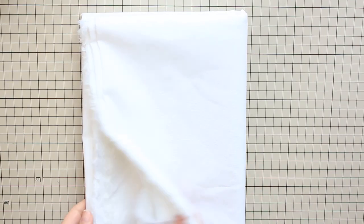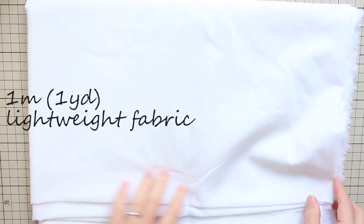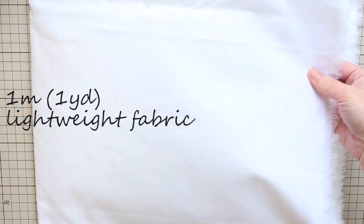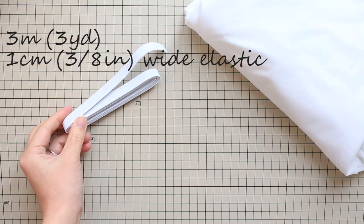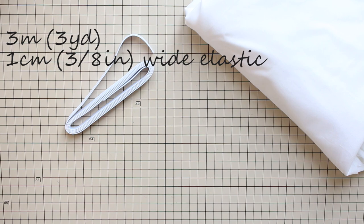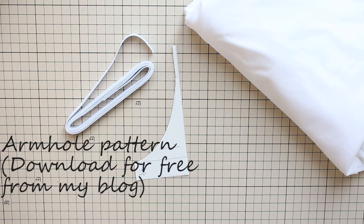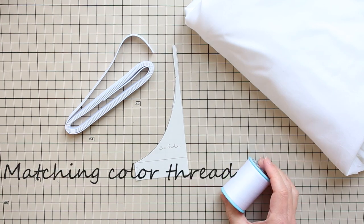To make this DIY peasant crop top, you need 1 meter or 1 yard of lightweight fabric. I'm using lightweight cotton here, but chiffon or lace would make a really cute top as well. 3 meters or 3 yards of 1 centimeter wide elastic, an armhole pattern you can download for free from my blog, the link is in the description, and matching color thread.